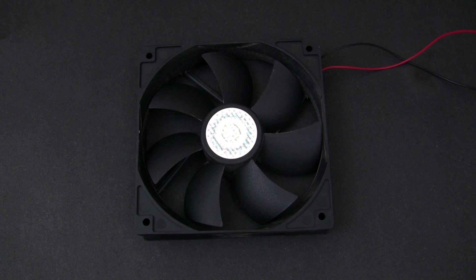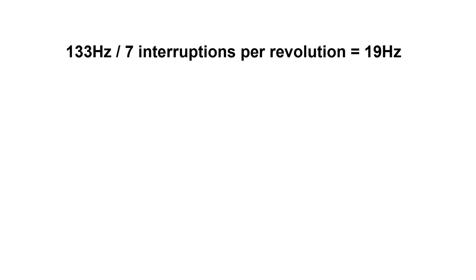Now, this fan has 7 blades. That means for every full rotation there are going to be 7 laser interruptions. So to calculate the RPM of the fan, we do 133 Hz divided by 7, which gives us 19 Hz.